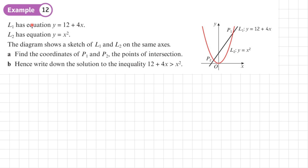Example 12: L1 has equation y = 12 + 4x — that's the straight line — and L2 is a quadratic with equation y = x², shown as the red curve. A sketch of L1 and L2 on the same axes is given, so we can see where the red quadratic is above or below the line, which will be very helpful.